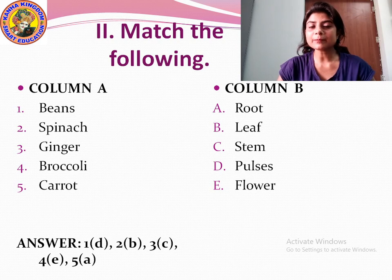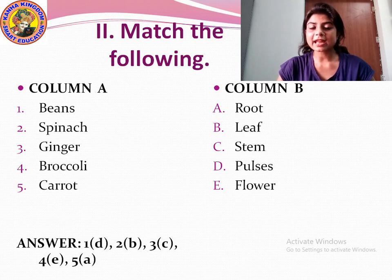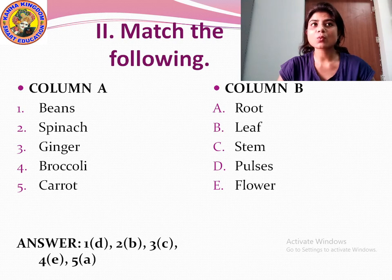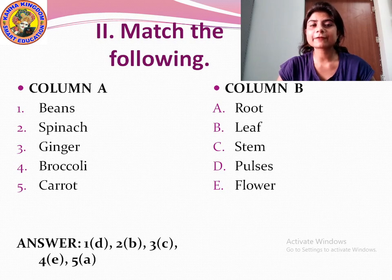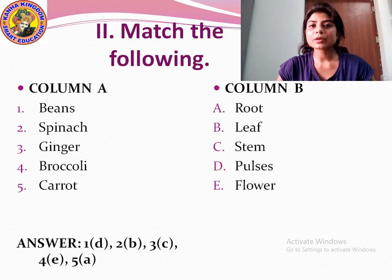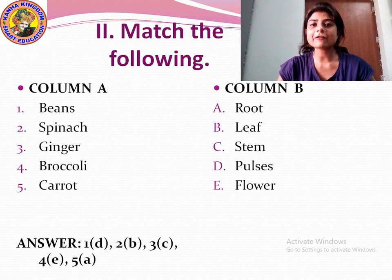To repeat: in column A — beans, spinach, ginger, broccoli, carrot. In column B — root, leaf, stem, pulses, flower. Answers: beans is D (pulses), spinach is B (leaf), ginger is C (stem), broccoli is E (flower), carrot is A (root). The answers are written below — you can see and match them.